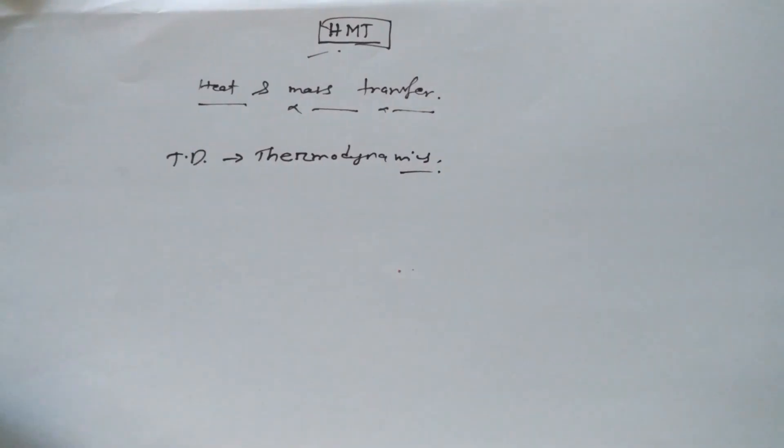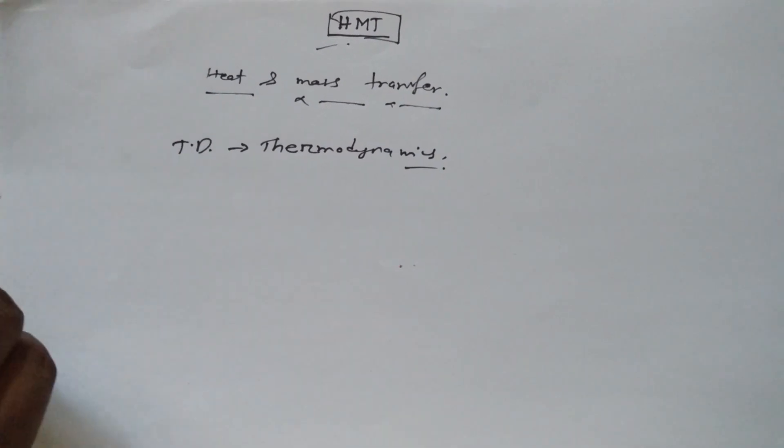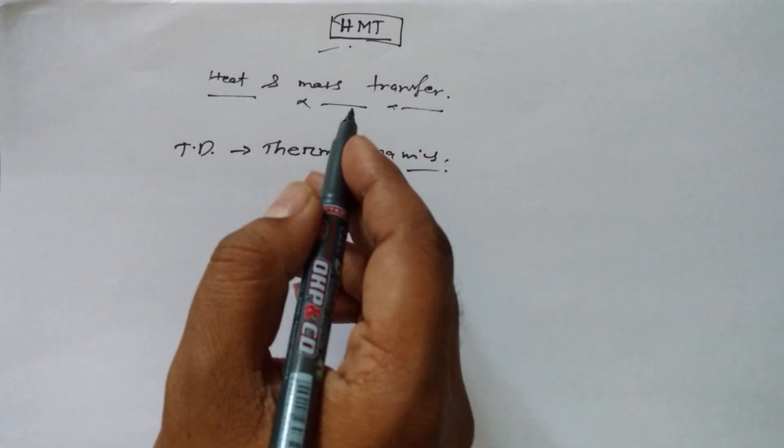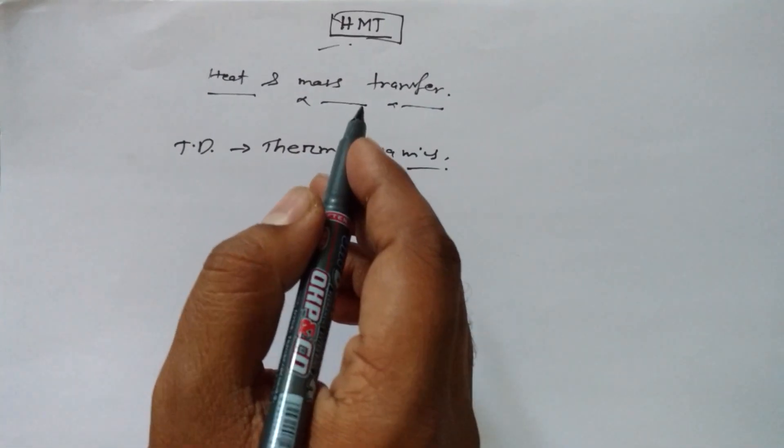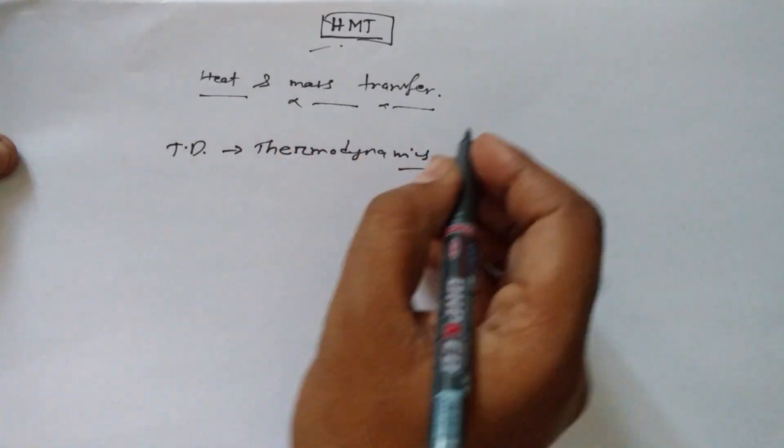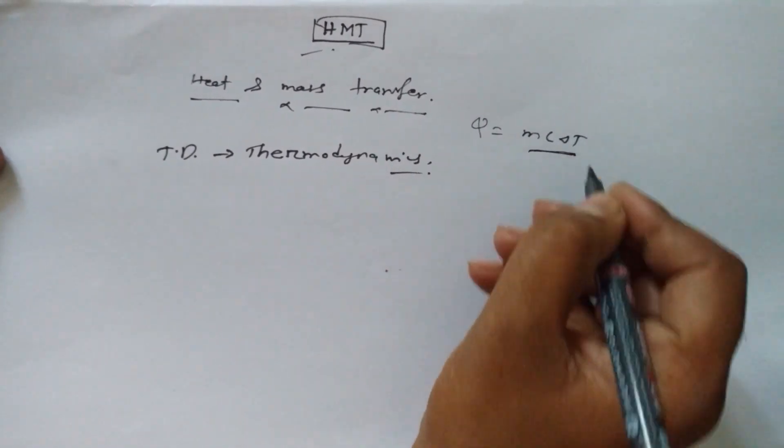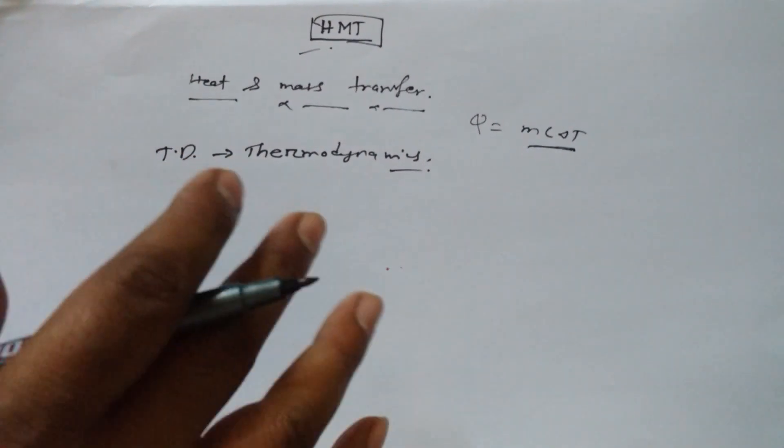In the next video I will share with you the difference between HMT and thermodynamics. But here, what we are going to do in heat and mass transfer - basically we are going to deal with a formula: q = mc∆t. If you are preparing for GATE examination...